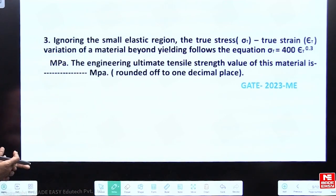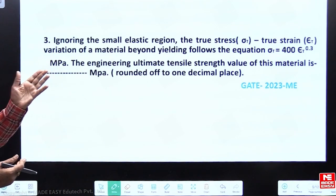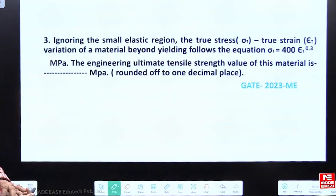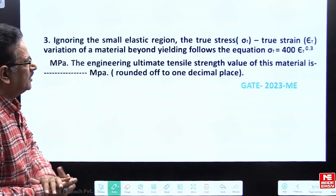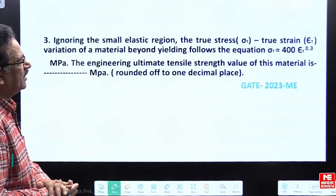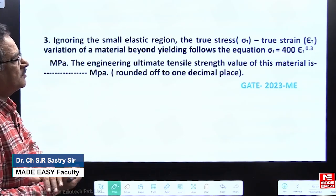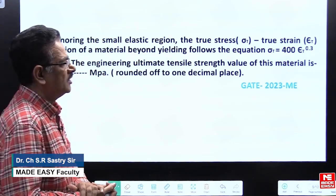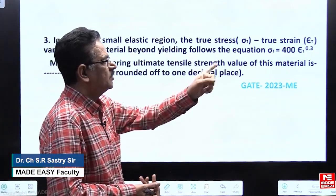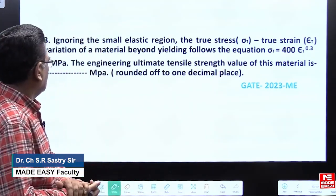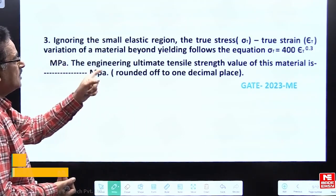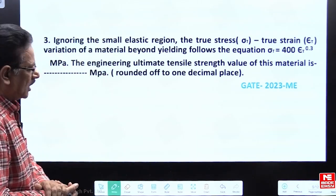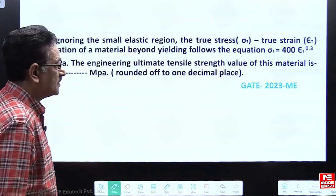The question reads: ignoring the small elastic region, the true stress–true strain variation of a material beyond yielding follows the equation sigma_t = 400 × epsilon_t^0.3 megapascals. The engineering ultimate tensile strength value of this material is to be found.